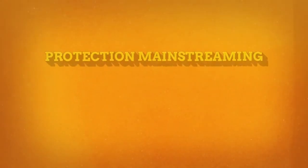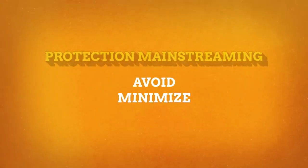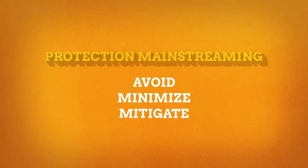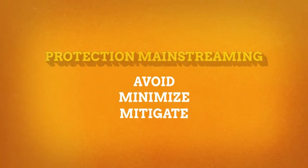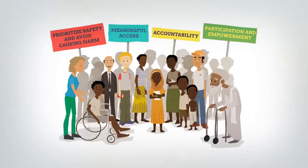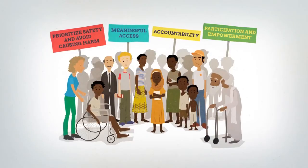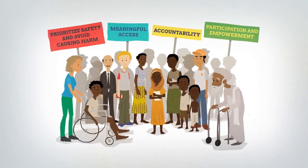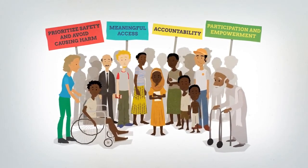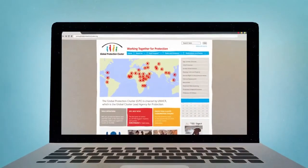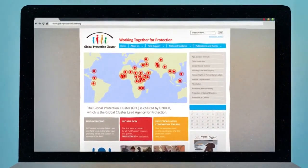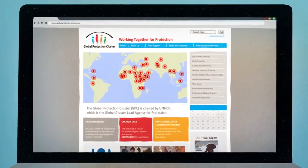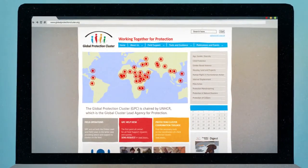Protection mainstreaming aims to avoid, minimise and mitigate the risks associated with the delivery of humanitarian assistance. Our roles might be different, but protection is everyone's responsibility. The Global Protection Cluster can provide resources to help you effectively mainstream protection into humanitarian assistance.